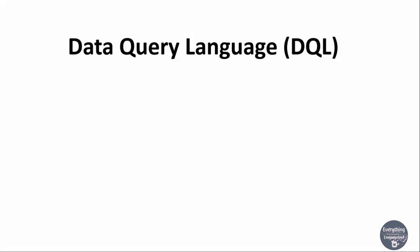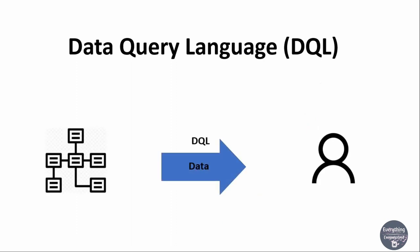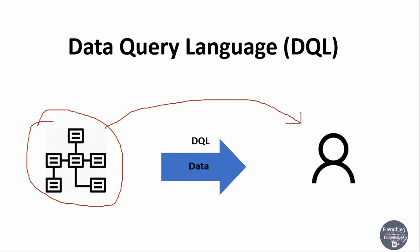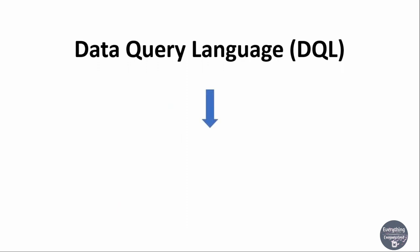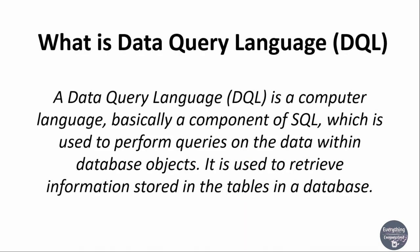DQL, or data query language, as the name suggests, is used to query or retrieve information from the tables present in a database. So if we have some data stored in a table, we can view it or access it with the help of DQL commands. A data query language is a computer language — basically a component of SQL — which is used to perform queries on the data within database objects. It is used to retrieve information stored in tables in a database.